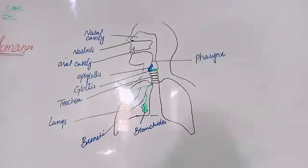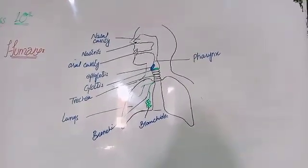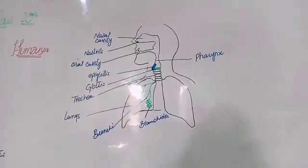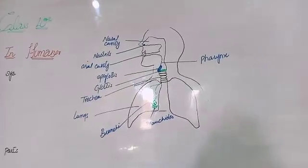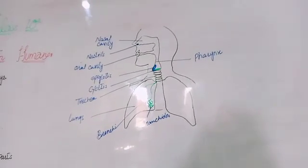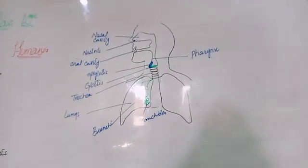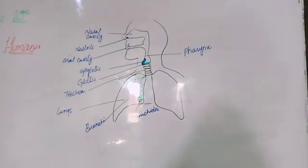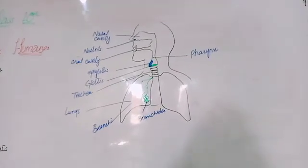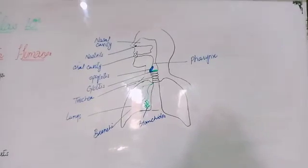So first, the air passageway starts from the nose and the nose is enclosed by the nasal cavity. The nasal cavity is separated by cartilage in the center, dividing it into two parts. The nose has nostril openings which filter dust and dirt particles, and also moderate the temperature of incoming air.